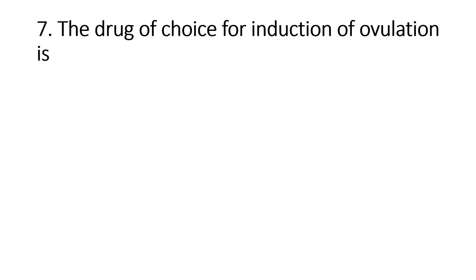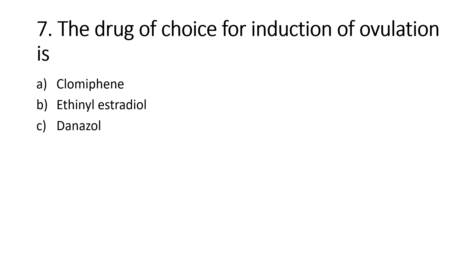The drug of choice for induction of ovulation is: Option A, Clomiphene; Option B, Ethinyl estradiol; Option C, Dinoprostone; Option D, Levonorgestrel. Right answer is Option A, Clomiphene. Clomiphene citrate is a non-steroidal agent used to stimulate ovulation.